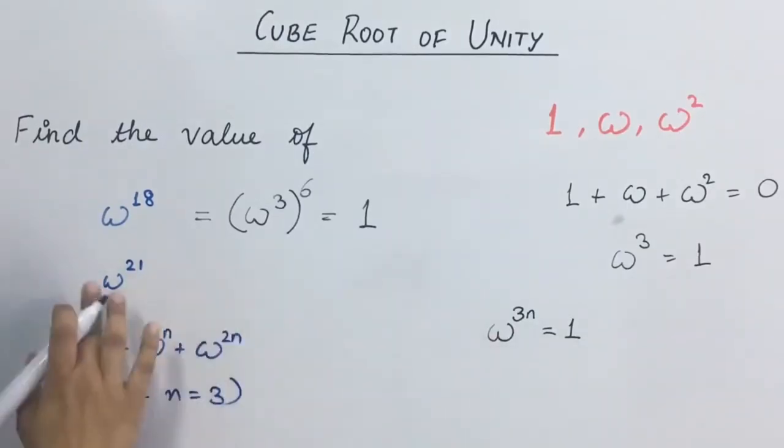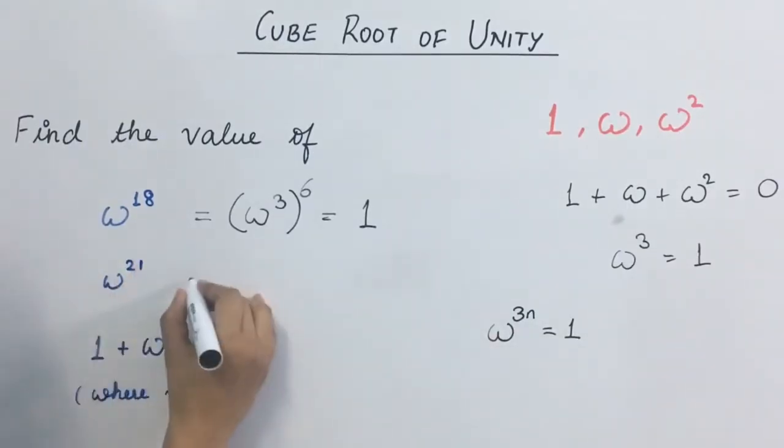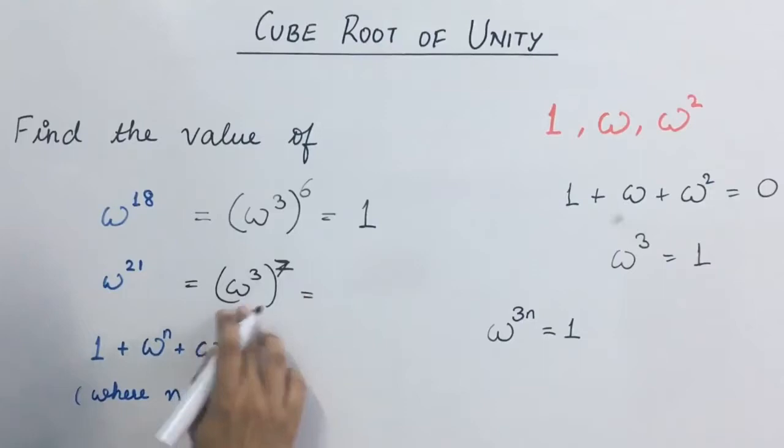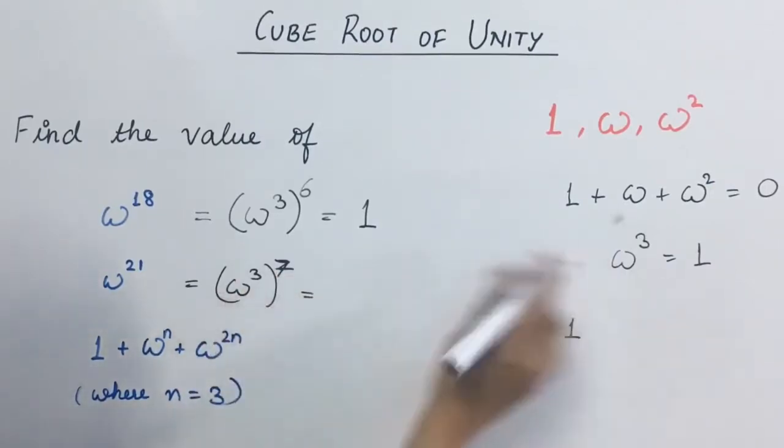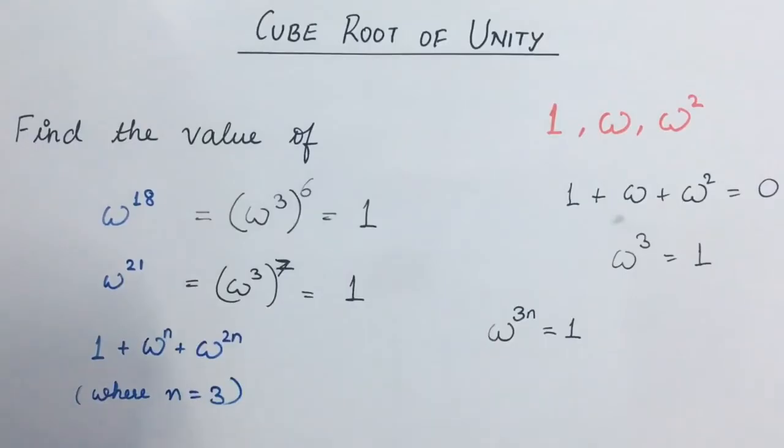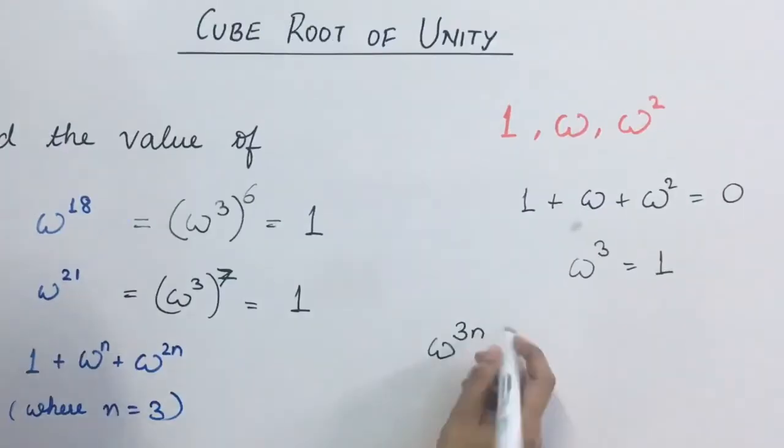We can check it again in this example. Omega 21 is omega raised to 3 into 7 times. So this will also be equal to 1 because omega cube is 1, toh yeh value bhi 1 ajayegi. From this, we can make an interpretation that omega raised to the power 3n, that is a multiple of 3, this value is always going to be equal to 1.